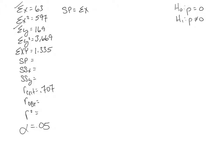And SP equals sum of X times Y minus the sum of X times the sum of Y divided by N, the sample size, okay? So let's see here. What was our sum of X times Y was 1,335 minus the sum of X was 63.